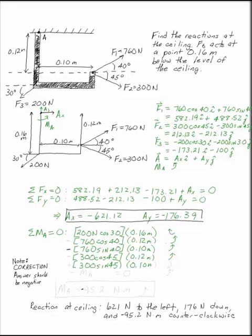And then you have 300 sine 45 acting at a distance of 0.010 meters, which tends to spin point A counterclockwise. So, those are your only forces that act to spin point A, that and MA,